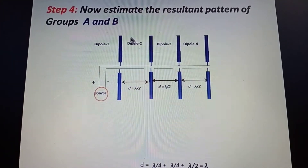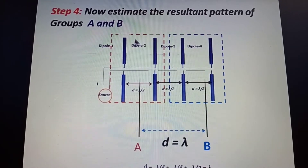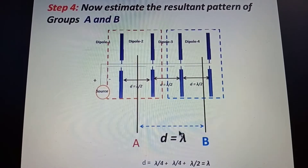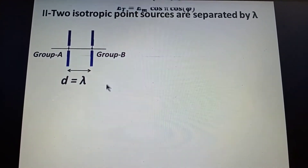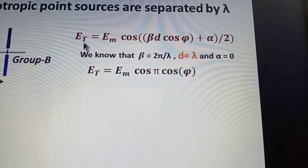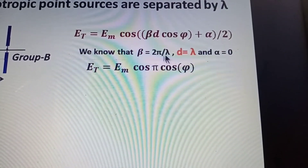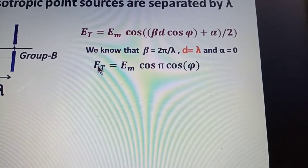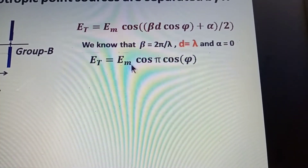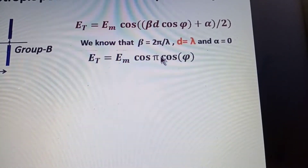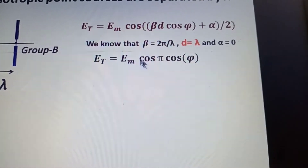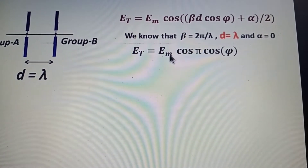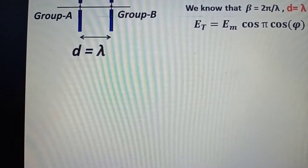We now estimate the resultant radiation pattern of groups A and B, which are separated by lambda. Using the same mathematical process for two isotropic points separated by d = lambda, the general equation gives the total electric field as E = E_m * cos(pi * cos(phi)). Previously the argument was pi/2; now it is pi. We proceed to find the maxima and minima for this group pattern.